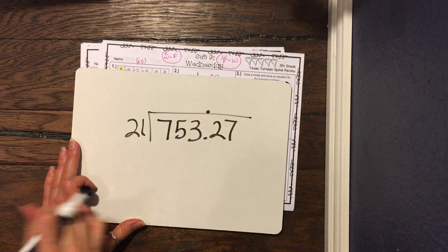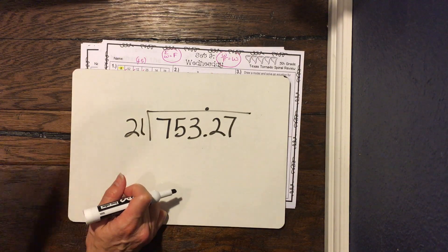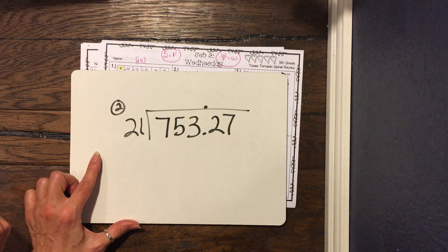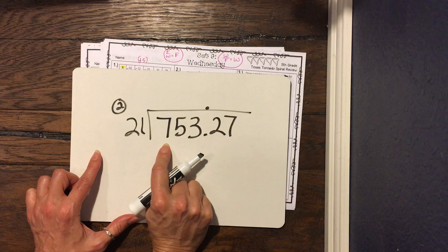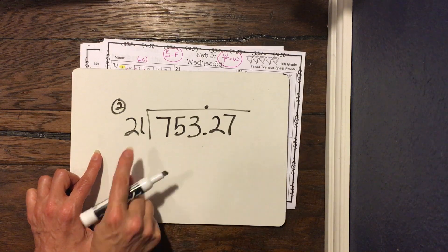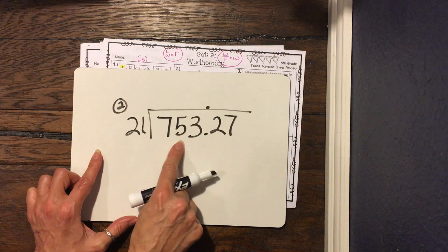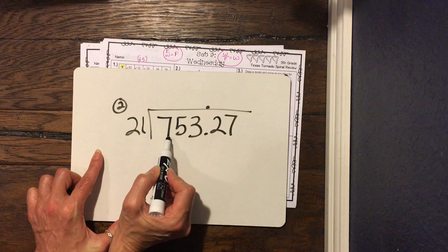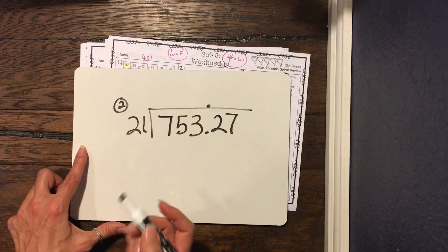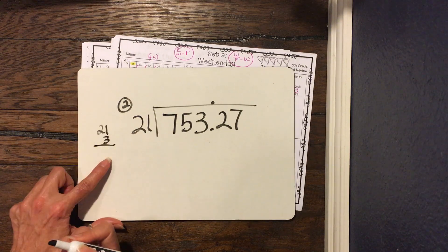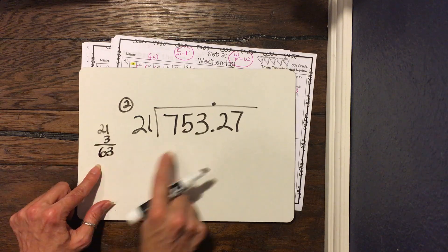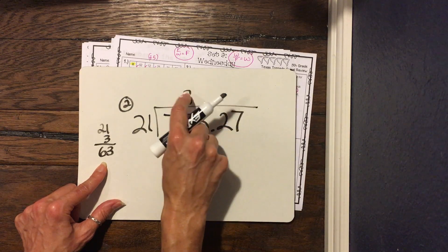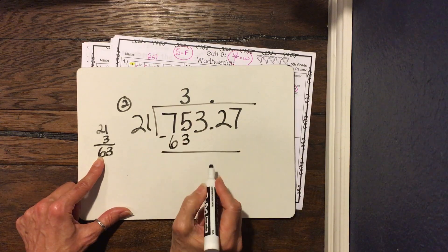We have 753.27 divided by 21. We always float our decimal up into the quotient first. Our divisor is 21 — we round it to 20, our helper. How many times does 21 go into 7? It doesn't. How many times does 21 go into 75? It's close to 25, so about 3 times. Checking: 3 times 1 is 3, 3 times 2 is 6, giving us 63. That works, so we put 3 in the quotient and write 63.